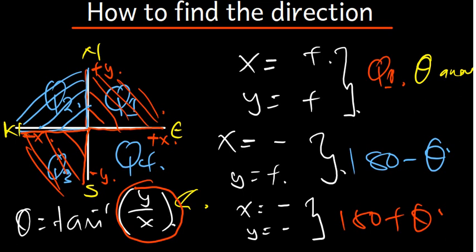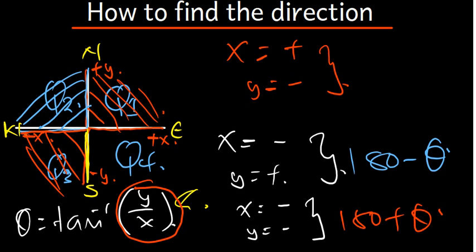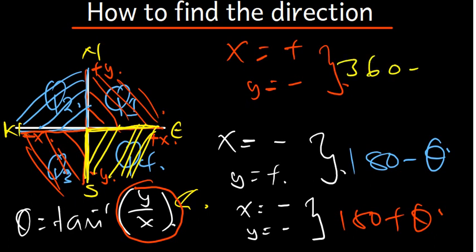The fourth case: when x is positive and y is negative, the angle has to fall in the fourth quadrant — x positive, y negative. So it falls in the fourth quadrant. What we need to understand is that when it falls in the fourth quadrant, it's going to be 360 minus theta.